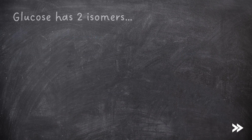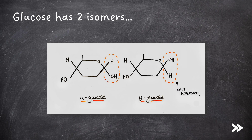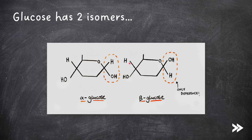Next we need to know the two isomers of glucose: alpha and beta glucose. Both alpha and beta glucose have an H and OH on either side. The difference is that in alpha glucose, the H and OH are on the same side — i.e. here we have two H's and here we have two OH's. In beta glucose, the H and OH have been flipped over, so now we have H's and OH's on opposite sides.